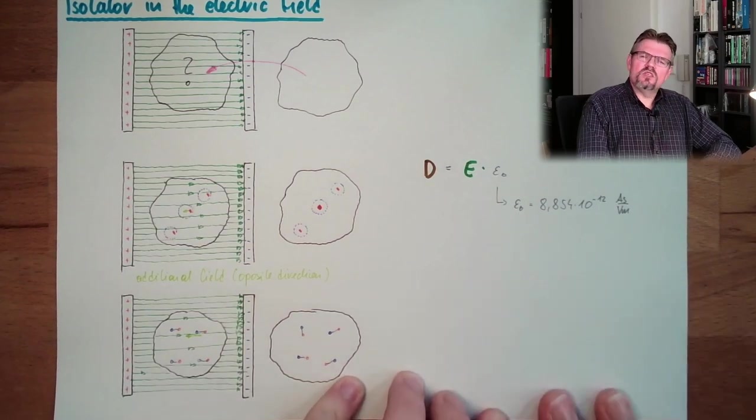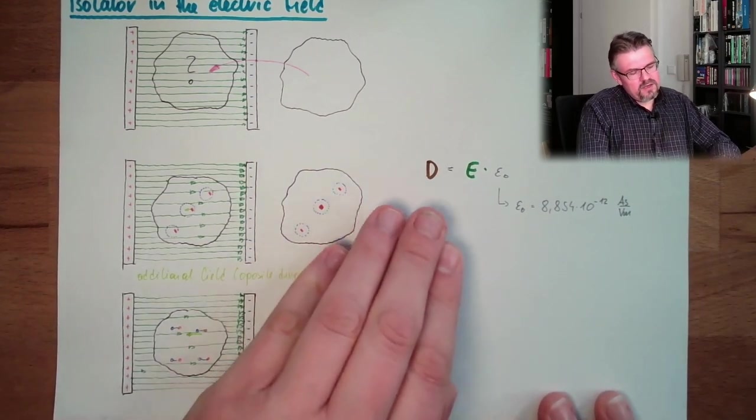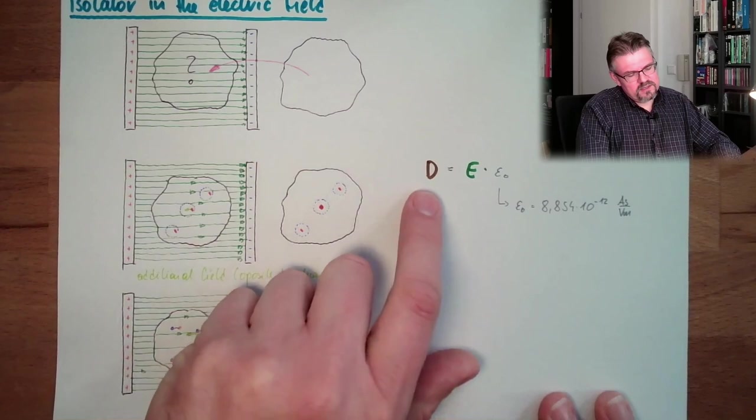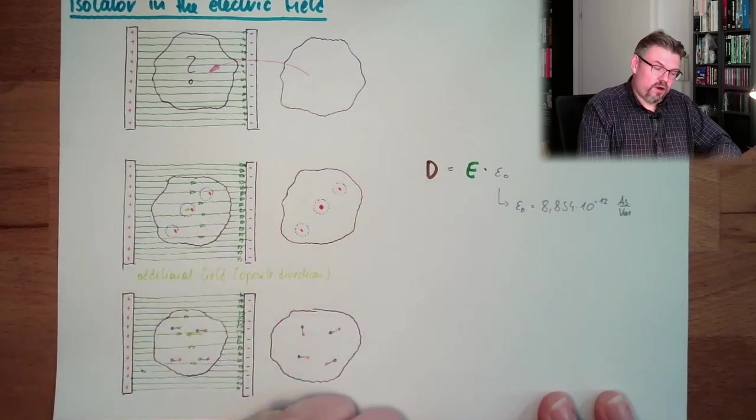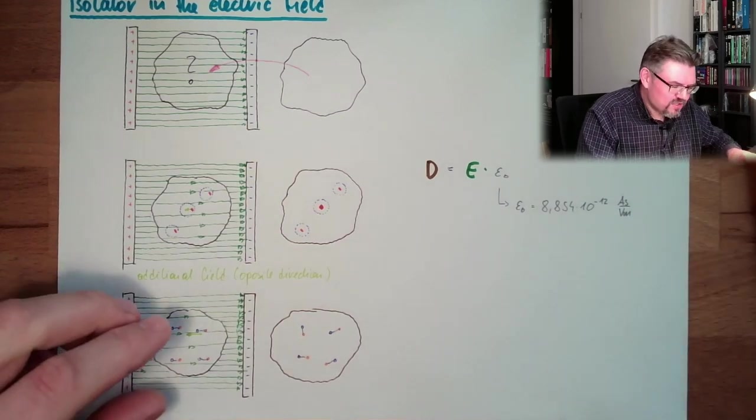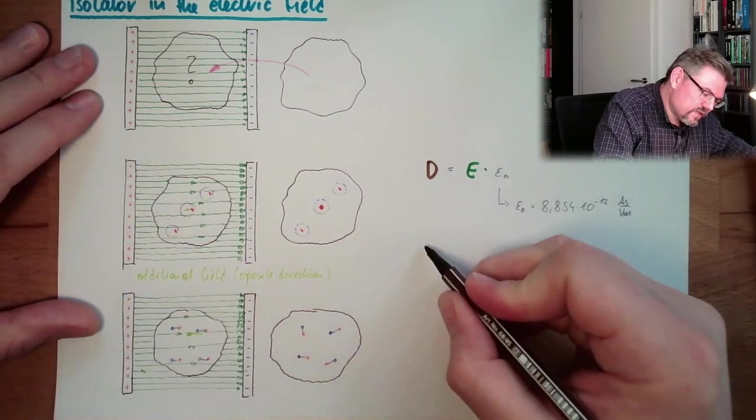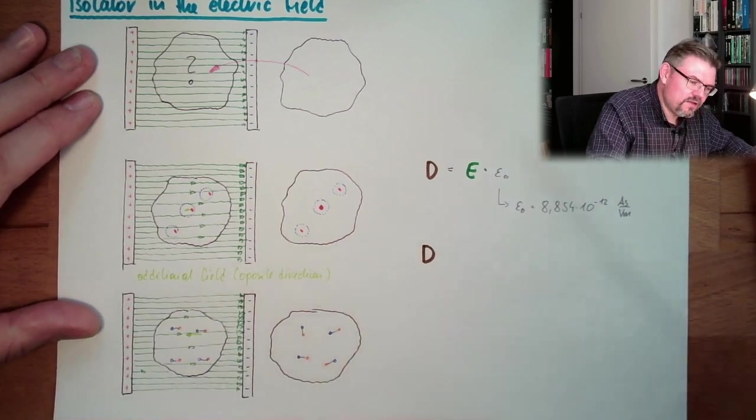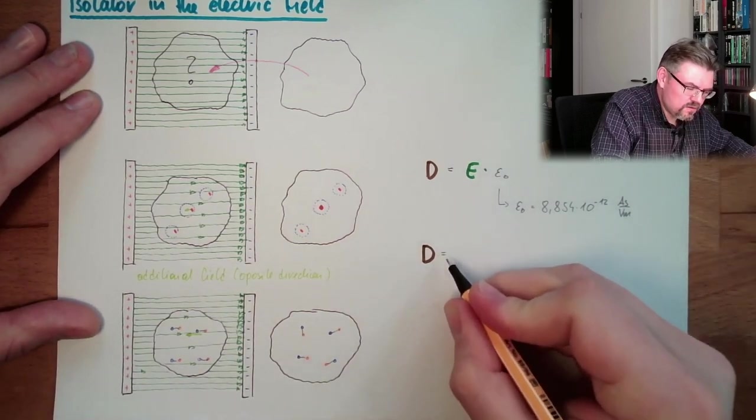This was epsilon zero. And we said this is going to combine the density, the flux density and the electric field, if there is no matter around. And now it's the same, it's just lowered. So the same, we have still the same formula, D equals E.